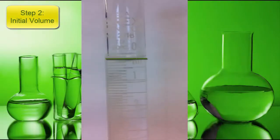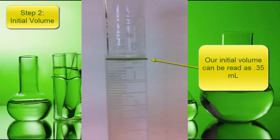Step 2: Finding the initial volume. Our initial volume can be read as 0.35 milliliters. Again, this is two decimal places.